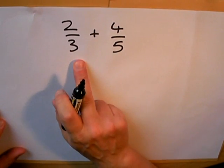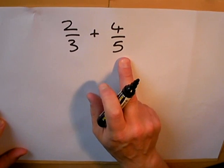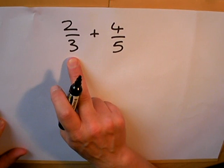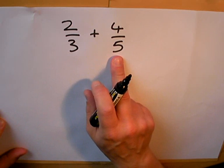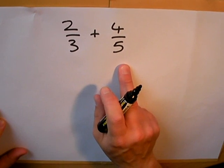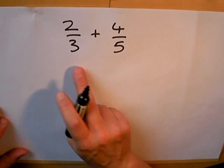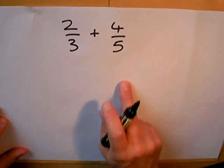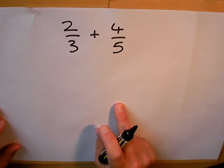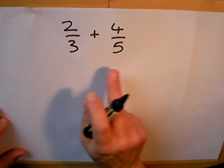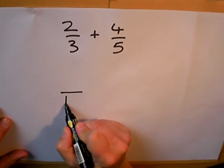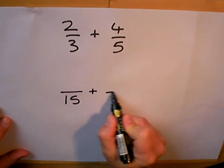I can't turn thirds into fifths. Three cannot be multiplied by any number to turn it into five or vice versa. So I'm going to have to choose a number that I can turn both three and five into. Now the first number that appears in the three times table and the five times table is 15, so I'm going to change both numbers into 15ths.